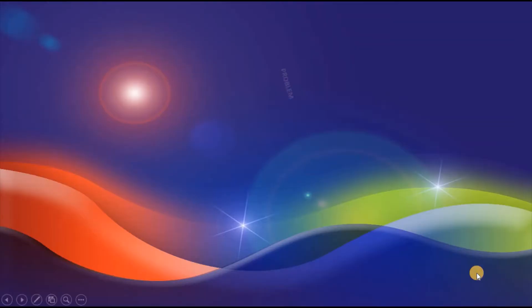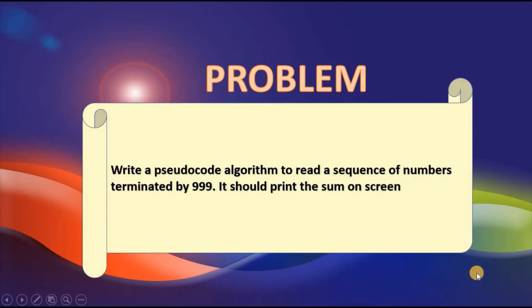Our second problem states: write a pseudocode algorithm to read a sequence of numbers terminated by 9.99, then print the sum on screen. We know there is a sentinel value — once the user enters 9.99 the program will end — and the sum will be printed on screen. What we don't know is how many numbers will be accepted before the program terminates. Let's go ahead and see the solution.